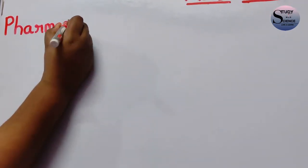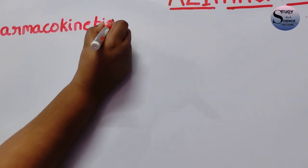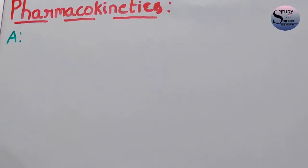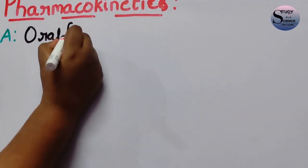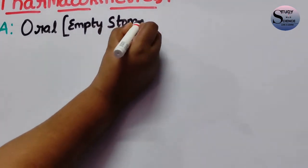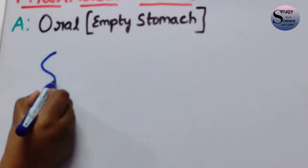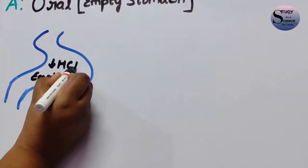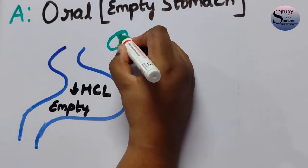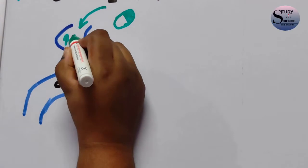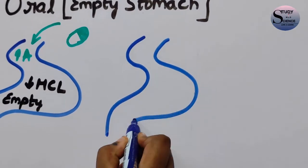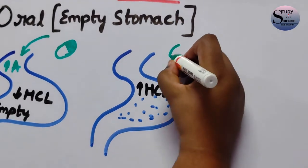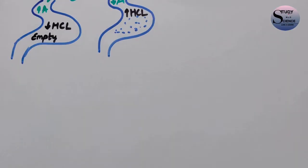Now let us discuss the pharmacokinetics of Azithromycin. Regarding absorption, Azithromycin gets absorbed well orally, particularly with an empty stomach. With an empty stomach there is less HCl content. HCl increases when food is taken, so with more HCl the drug's absorption gets interrupted and decreases. That is why taking it on an empty stomach is preferred.